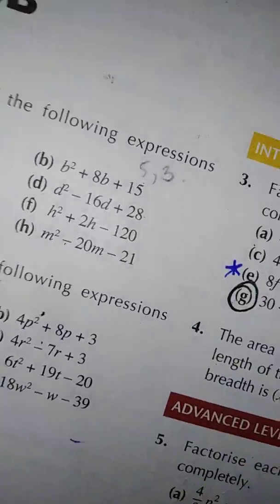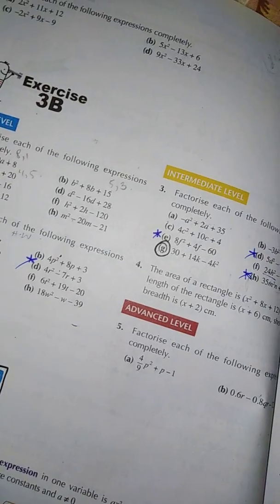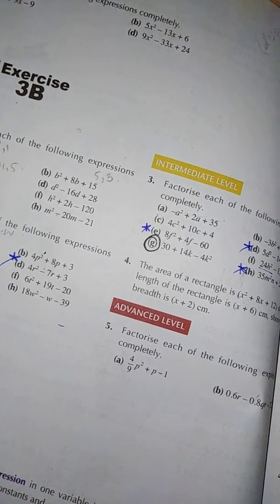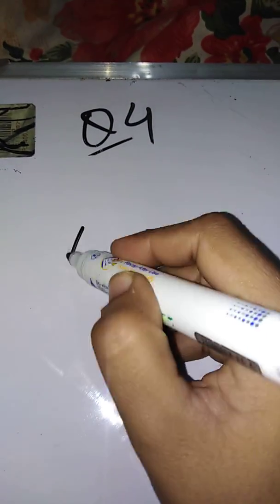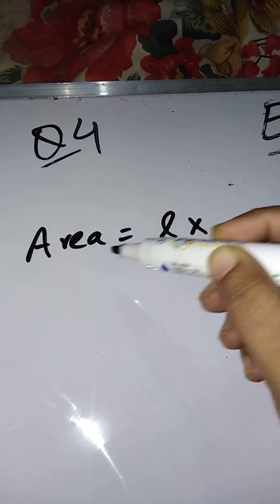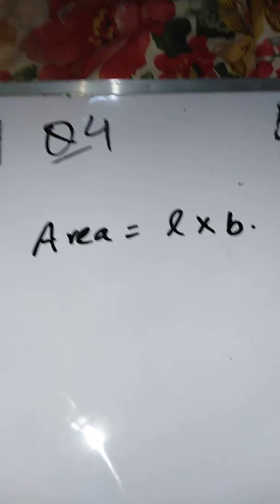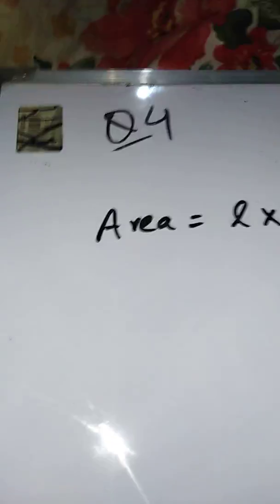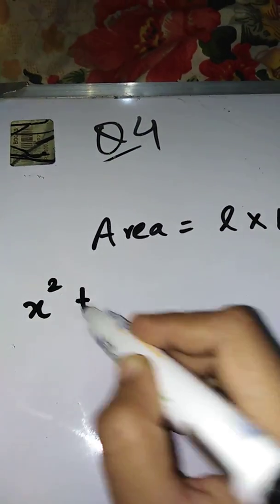Show that breadth is x + 2 cm. Here area is given, length is also given, and we need to find the breadth and prove it is x + 2. First write the formula. The area of a rectangle is length multiply by breadth. The area is given as x² + 8x + 12.